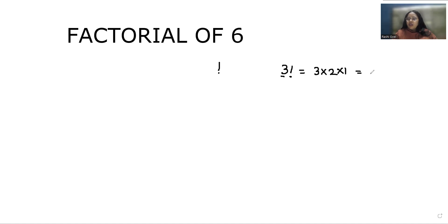Now we have to find the factorial of 6. So 6 factorial means we have to multiply it till 1: 6 times 5 times 4 times 3 times 2 times 1.